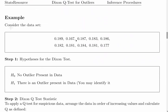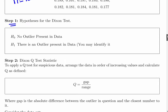Here's a little example. We have 10 numbers: 0.189, 0.167, 0.187, 0.183, 0.186, 0.182, and so on. Step one, the null hypothesis is no outlier present in the data. The alternative hypothesis is that there's an outlier present in the data - you should identify it.